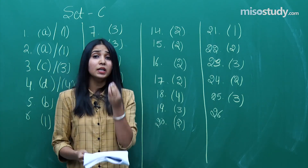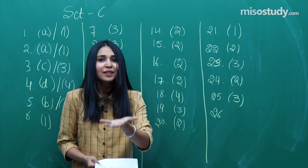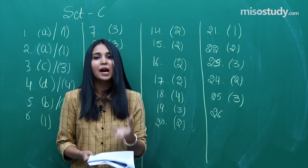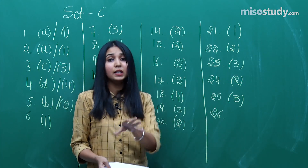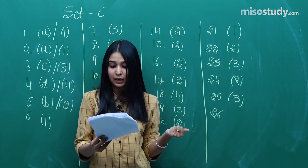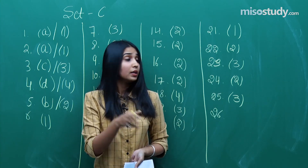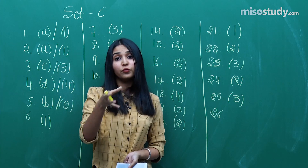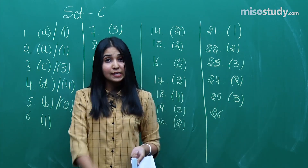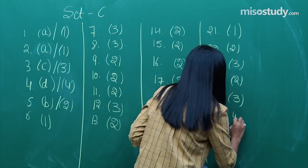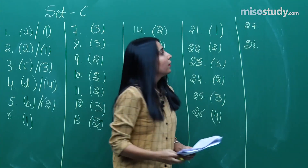Question number 26 was a really tough question — good in terms of difficulty, but hard for students. It was from the equilibrium section, and as I said in the beginning, equilibrium covered around 4 to 5 questions — it seems to be the examiner's favourite topic this time. The correct option for question 26 is option 4.